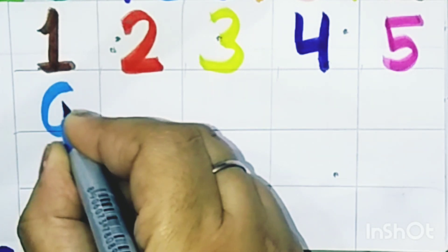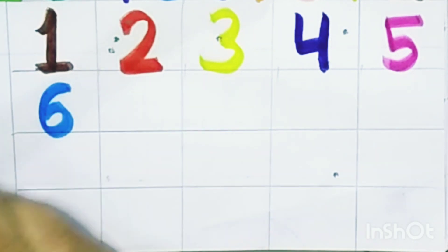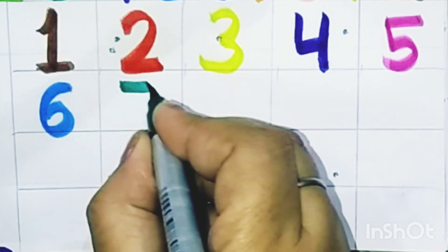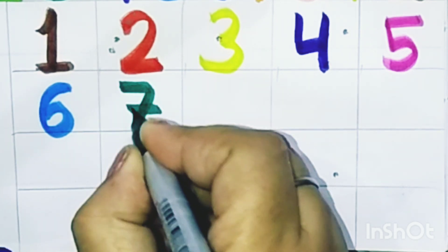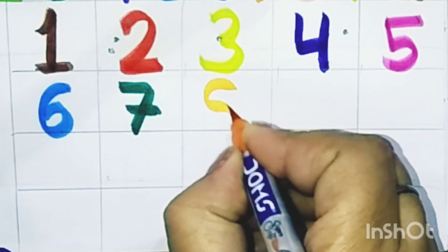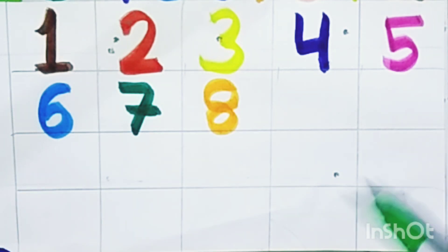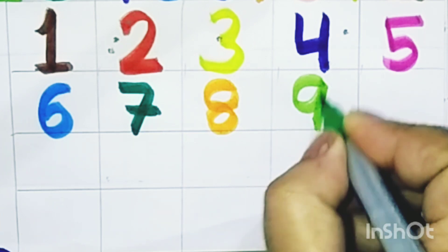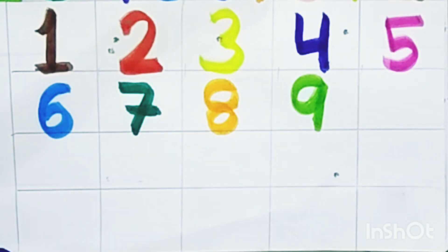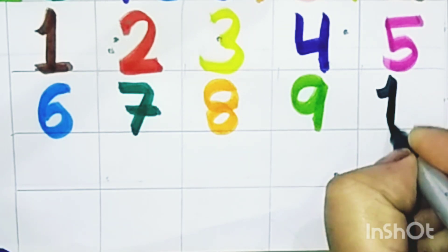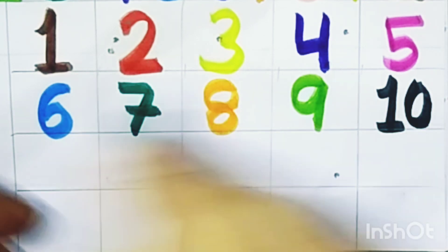Six six, seven seven, eight eight, nine nine, one zero ten, one zero ten.